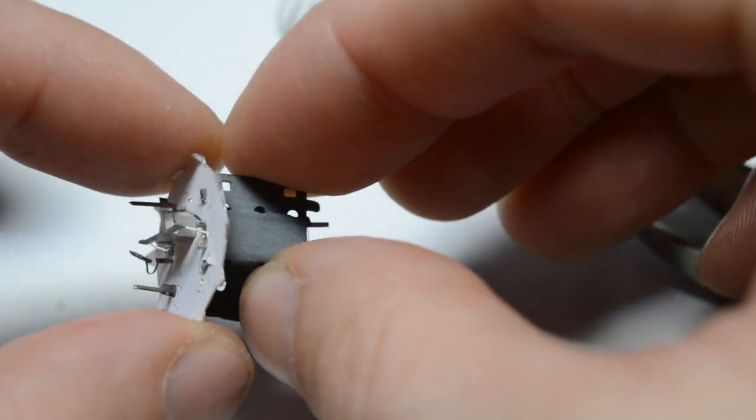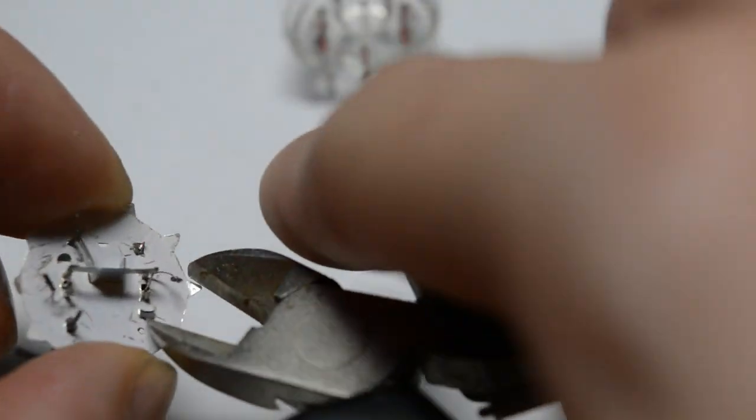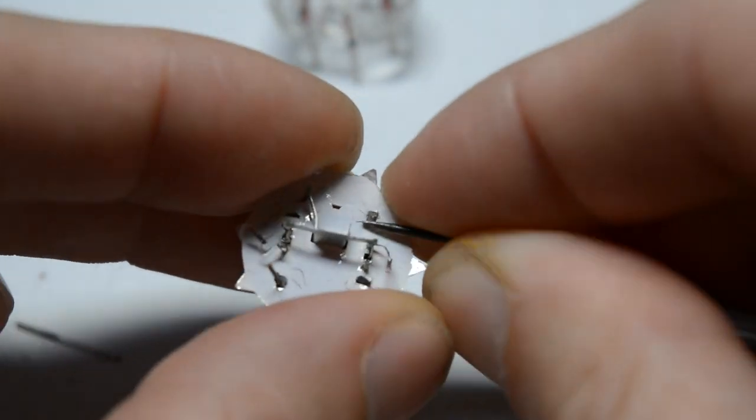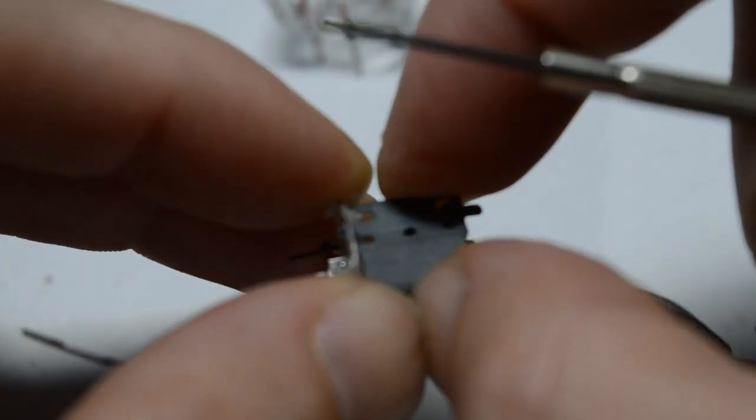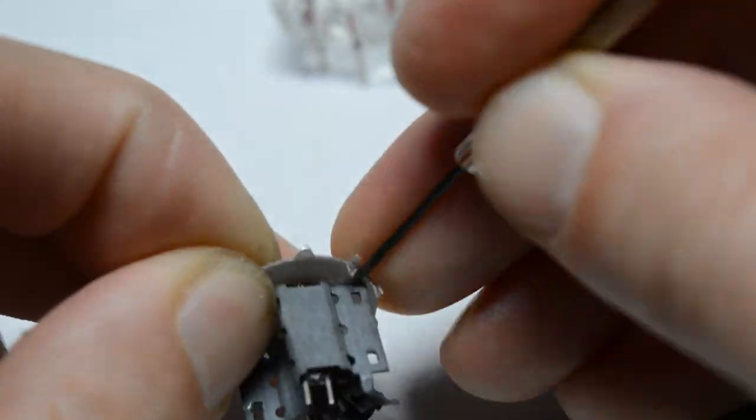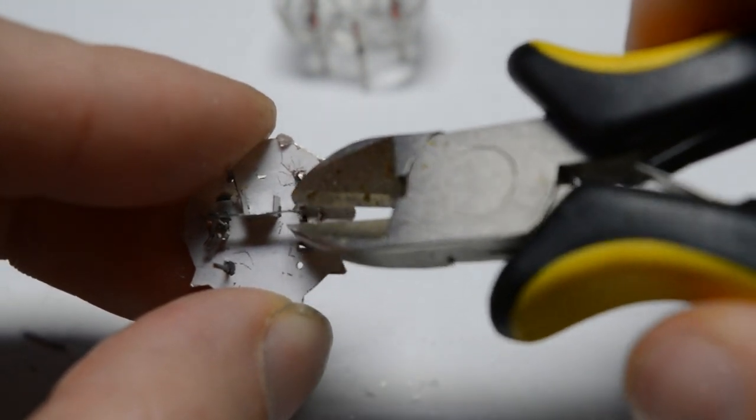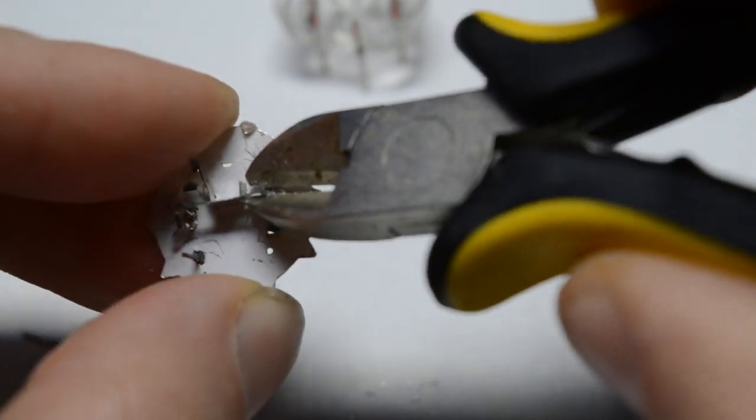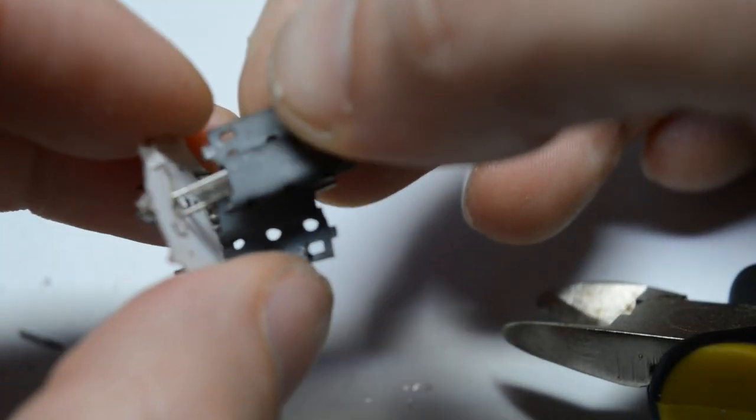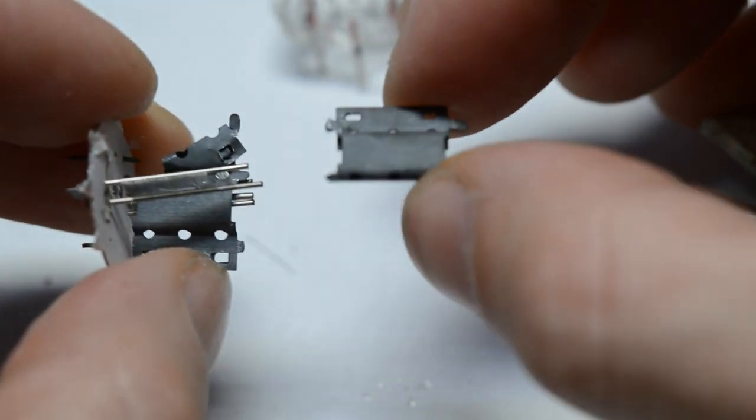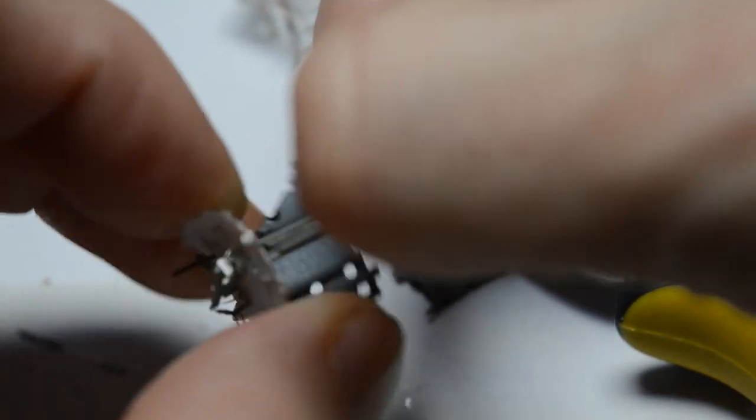So now the anode doesn't come off yet. Just remove everything else before removing the anode. There we go, so the anode is off. So is the grid. It's bent a bit, but it's out.